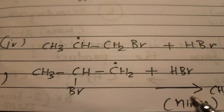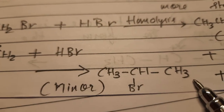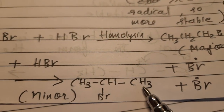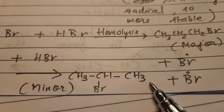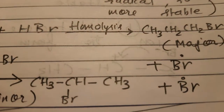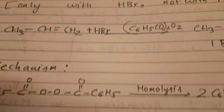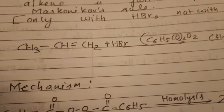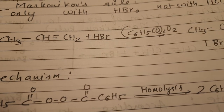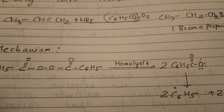The other possibility — Br• attaching to give a primary radical — results in 2-bromopropane as the minor product. Through various observations, it is confirmed that 2-bromopropane is the minor product here. This entire process occurs in the presence of peroxide and only with HBr, and is known as anti-Markovnikov's rule. Go through these two reactions carefully — tomorrow I will explain further.